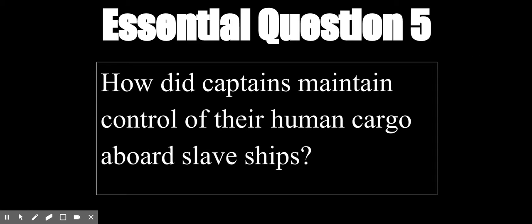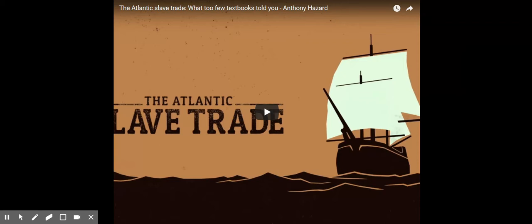This is one of the grimmest topics I'm ever going to teach. Today we're going to focus on essential question number five: How do captains maintain control of their human cargo aboard slave ships? By control, I mean how did captains and crew take away the freedoms of the Africans on board so they could guarantee their survival and prevent rebellion. Rebellions happened all the time. Before we begin, let's watch this TED-Ed video on the transatlantic slave trade, which does a really good job describing why the slave trade took place, who benefited, and the enormous costs of this incredible human tragedy.